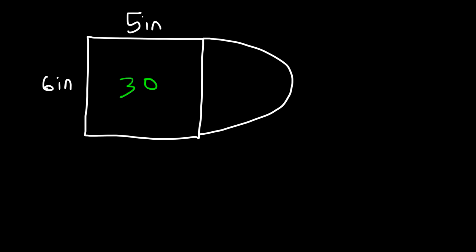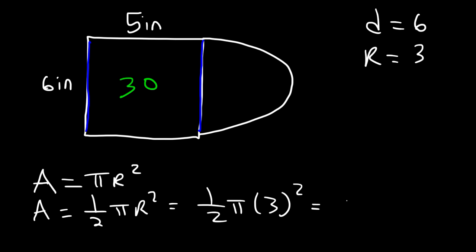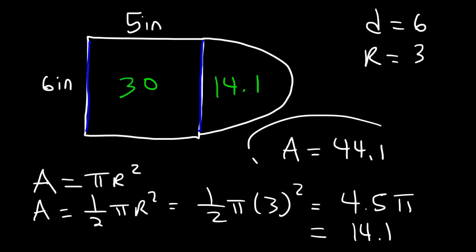Now what about the area of the semicircle? Notice that we have the diameter of the semicircle. The diameter is 6 inches long. So if the diameter is 6, the radius is half of that — half of 6 is 3. The area of a complete circle is pi r squared. The area of a semicircle, or half of a circle, is 1/2 pi r squared. So it's going to be 1/2 times pi times 3 squared. 3 squared is 9, half of 9 is 4.5. And multiplying 4.5 by 3.14, we get about 14.1. So the total area is 30 plus 14.1, or 44.1 square inches.